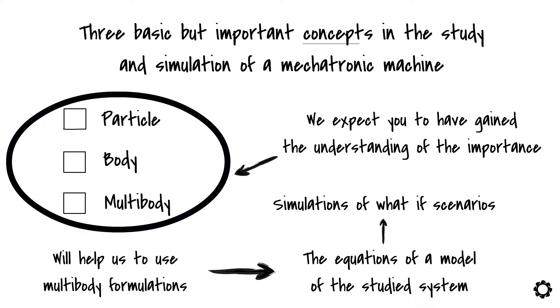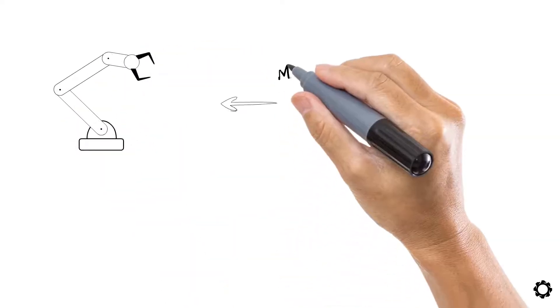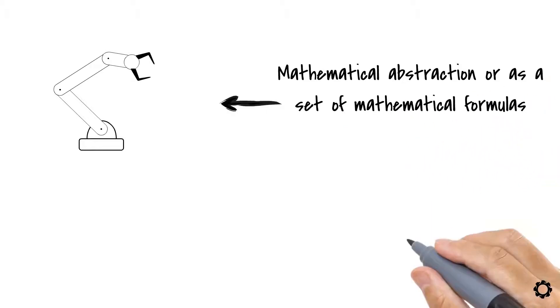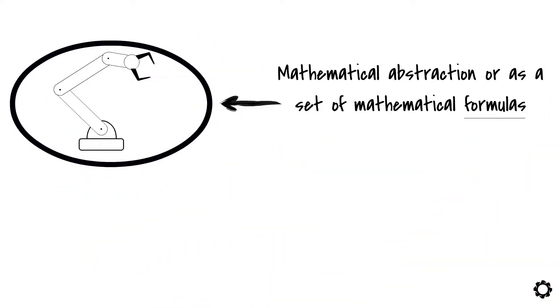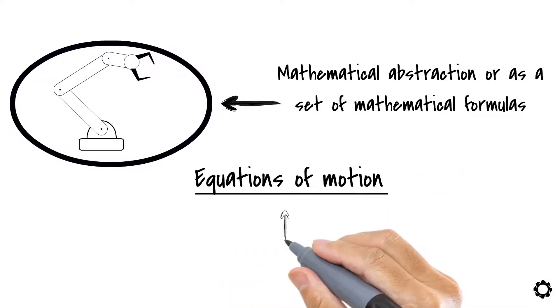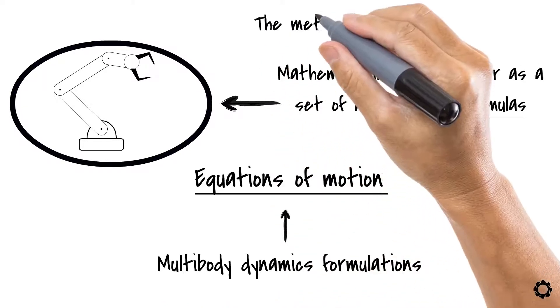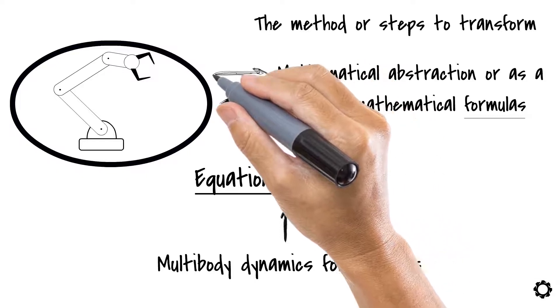In our computational dynamics journey, we have mentioned the need for representing a mechanical system as a mathematical abstraction or as a set of mathematical formulas to be able to describe such a mechanical system. These formulas are known as equations of motion. The equations of motion are born from multibody dynamics formulations, which tells us the method or steps to transform the mechanical system into its mathematical abstraction.